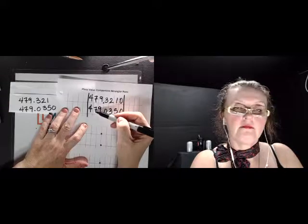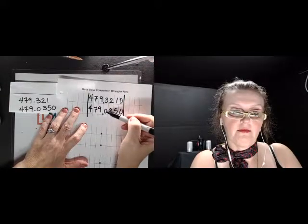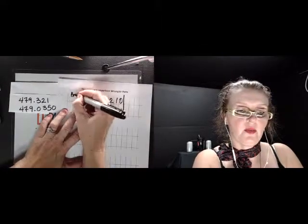Now we look at it as if it were alphabetical order. Fours are the same, sevens are the same, nines are the same. Three is bigger than zero, this is the bigger one.